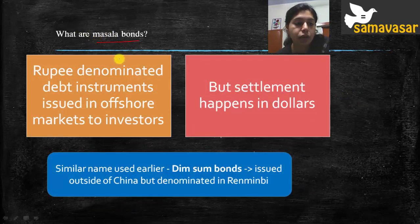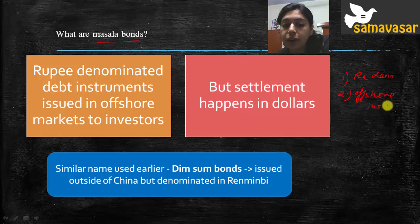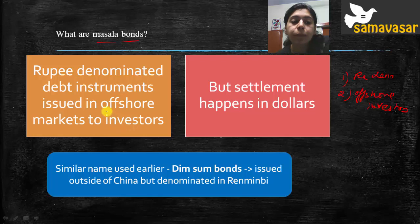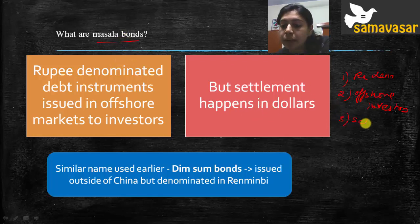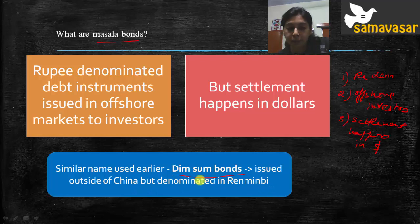Now let's understand what Masala Bonds are. They are rupee denominated debt instruments issued in offshore markets to investors. First, they are rupee denominated. Second, they are issued for offshore investors — if you are sitting in India you cannot buy them, as they target people abroad. The settlement, however, happens in dollars. A similar concept existed in China called Dim Sum Bonds, which were issued outside China but denominated in renminbi. So to summarize: Masala Bonds are rupee denominated, for offshore investors, but settled in dollars.